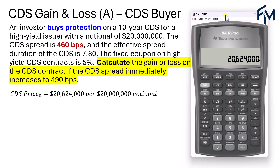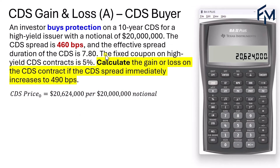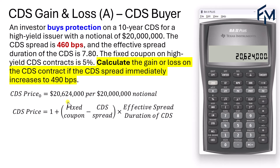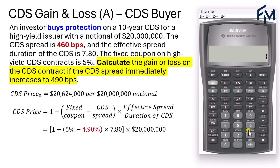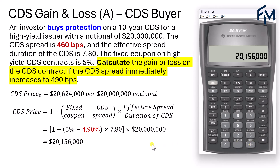Now let's move on to the next part. Given the same contract and the same investor, calculate the gain or loss on the CDS contract if the CDS spread immediately increases to 490 basis points. The spread increases by 30 basis points, so we recalculate the CDS price using the new CDS spread of 4.9%: 1 plus (0.05 minus 0.049) times 7.8, multiplied by $20 million. The CDS price drops to $20,156,000.